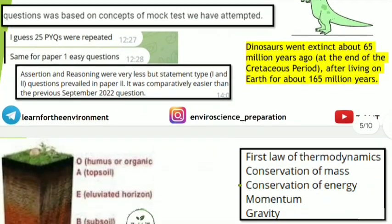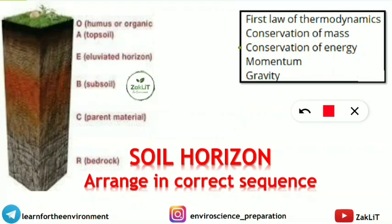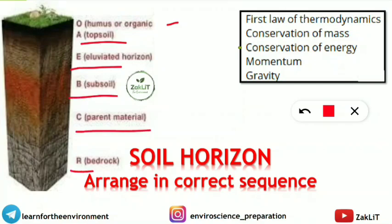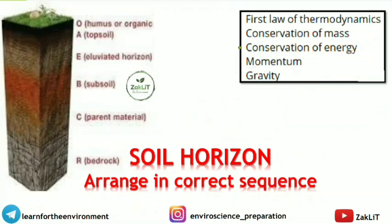Now we will discuss the questions one by one and determine the correct answers — these are taken from memory-based sources. For soil horizon arrangement in correct sequence: the topmost horizon is O (humus/organic layer), then A (topsoil), E (eluviated horizon), B (subsoil), C (parent material), and R (bedrock). So the correct sequence is O-A-E-B-C-R.